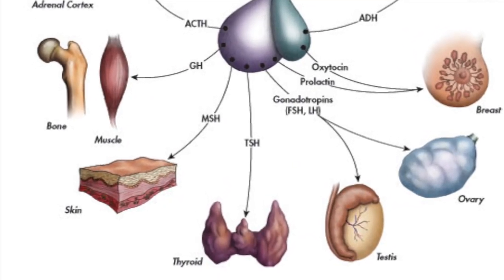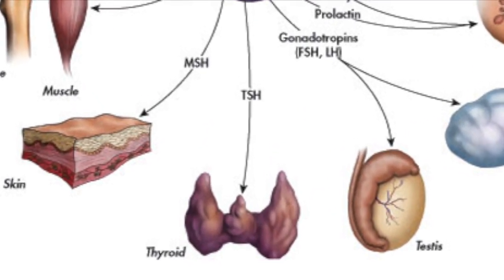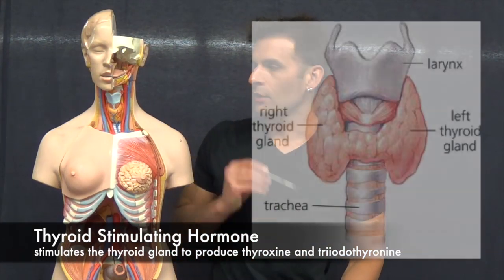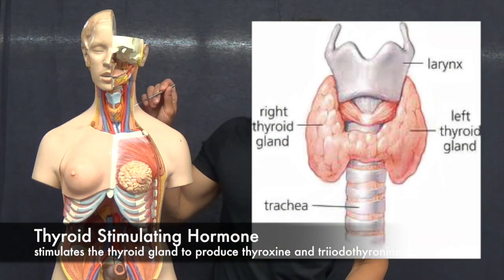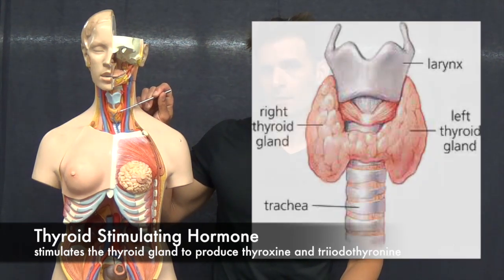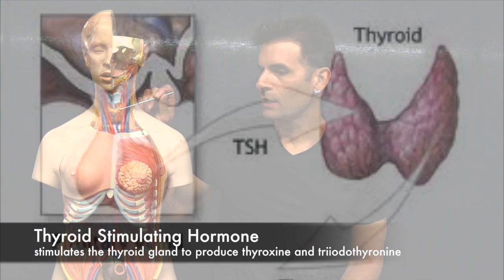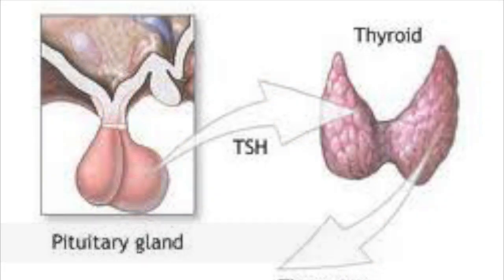Thyroid stimulating hormone acts on the thyroid gland, which is a butterfly-shaped gland located on the larynx. Thyroid stimulating hormone stimulates the thyroid gland to secrete its hormones.